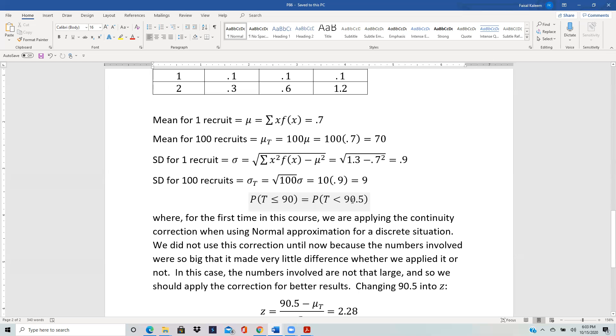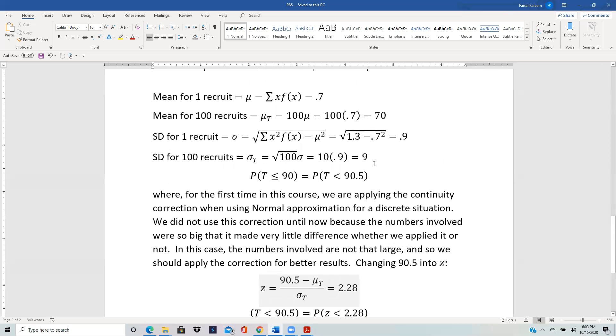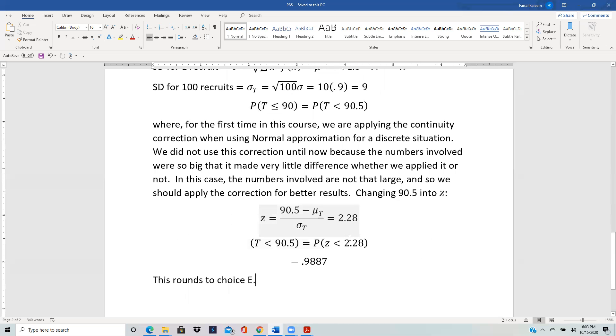The reason why we haven't applied continuity correction until now, even though we have done quite a few problems like this, is that the numbers involved were so big that it made practically no difference whether you applied it or not. So less than 90.5, so it means you will change 90.5 into z score. So 90.5 minus mean of the T over standard deviation of T, which was the 70 and the 9, so you get 2.28 for the z.